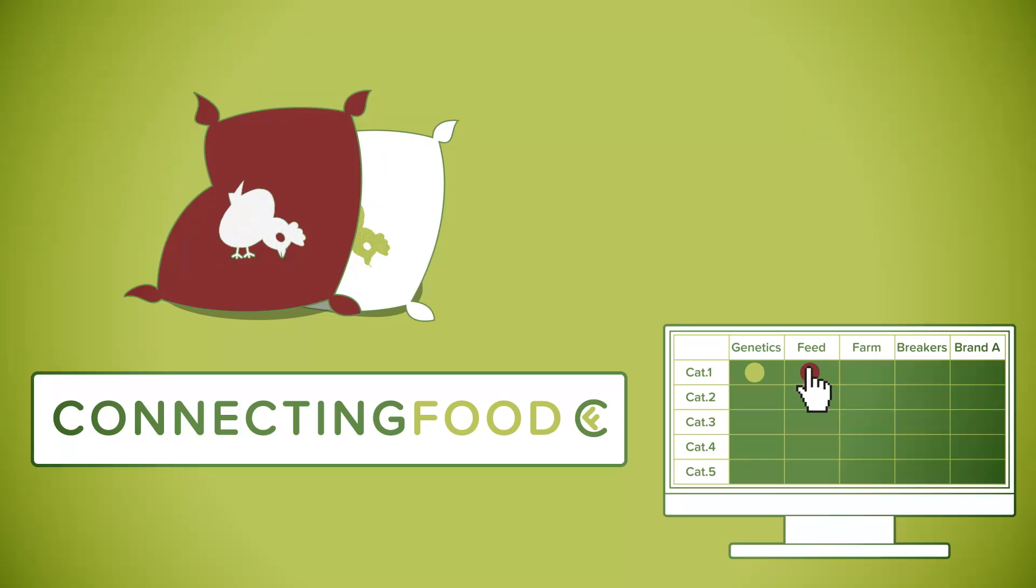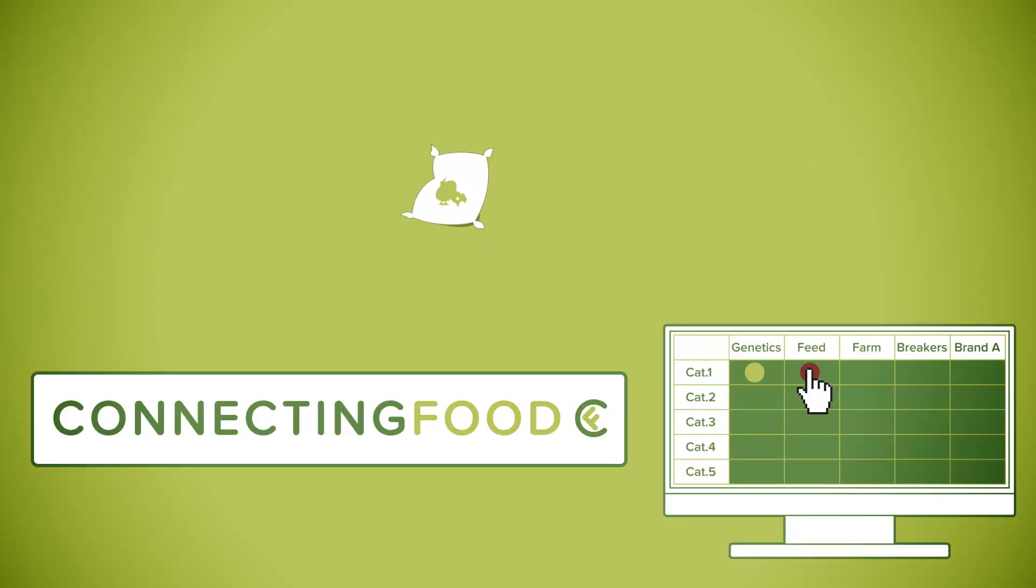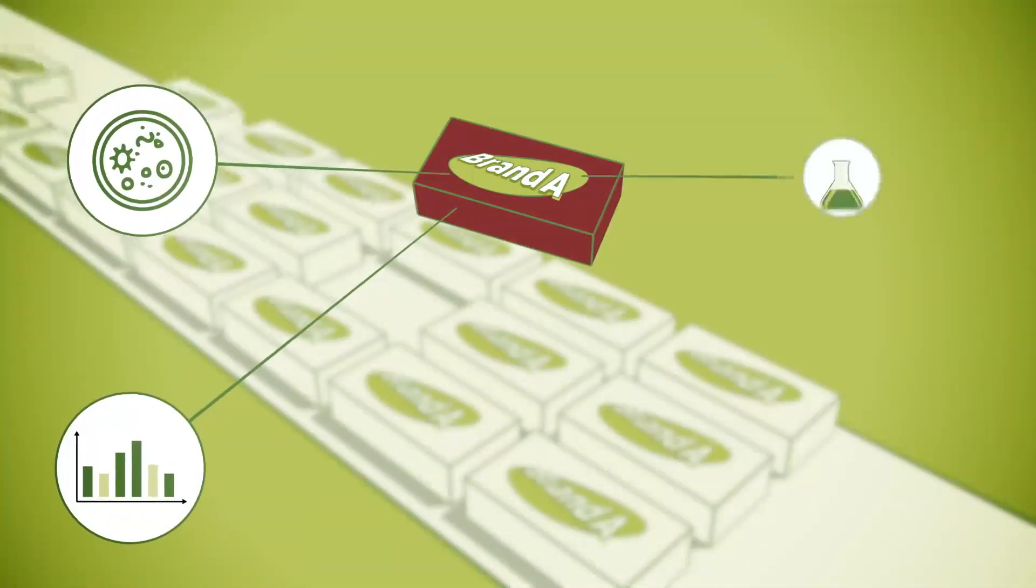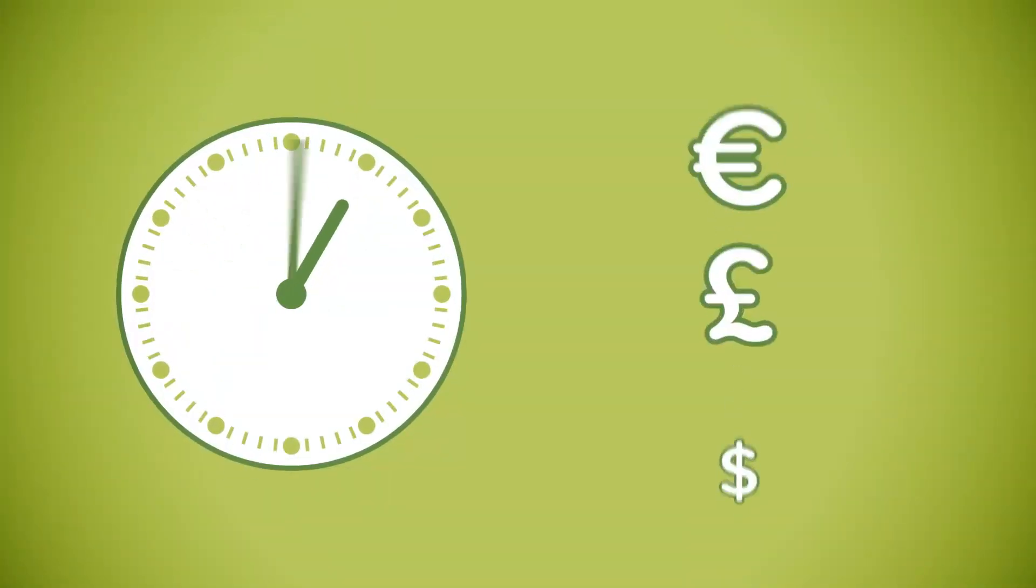Thus, non-compliant products, even at the beginning of the chain, can be redirected into other chains for which the product is compliant, thus avoiding waste. The Connecting Food system also means brand A's quality assurance team can concentrate on products which have a problem instead of randomly sampling, thus saving time and money.